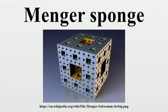The construction of a Menger sponge can be described as follows. Begin with a cube. Divide every face of the cube into nine squares, like a Rubik's cube. This will subdivide the cube into 27 smaller cubes. Remove the smaller cube in the middle of each face, and remove the smaller cube in the very center of the larger cube, leaving 20 smaller cubes.